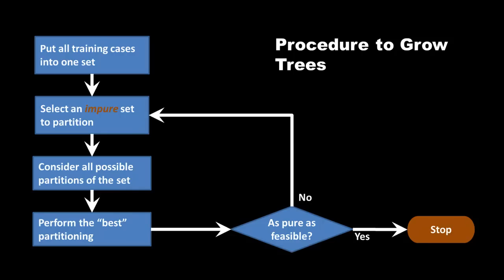But if you still have cases which it is possible to improve upon, then select one of the groups that you have which is impure. Again, consider all the possible partitions, perform the best partition. Again, see whether we have now finished, whether all the groups we have got are all pure. If not, we continue the process. At some point, you will reach a stage when you cannot do any more partitioning because everything is pure, or whatever you do, you cannot improve things. Then you stop. This is the process of growing a tree. Very simple, very straightforward.